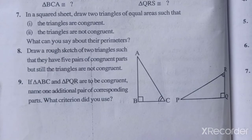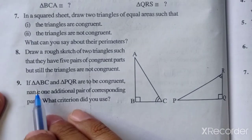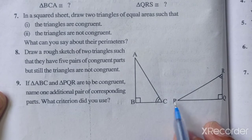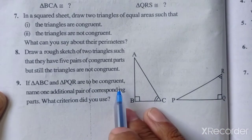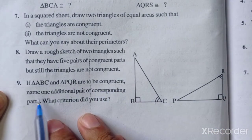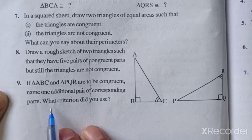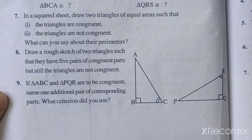Now our next question, question number 9: If triangle ABC and triangle PQR are to be congruent, name one additional pair of corresponding parts. What criteria did you use?